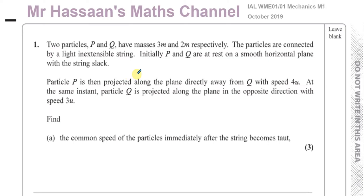It tells us about two particles P and Q, which have masses 3m and 2m respectively. The particles are connected by a light inextensible string. Initially, P and Q are at rest on a smooth horizontal plane with the string slack. Particle P is then projected along the plane directly away from particle Q with speed 4u. At the same instant, particle Q is projected along the plane in the opposite direction with speed 3u.